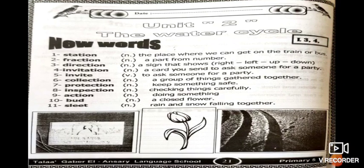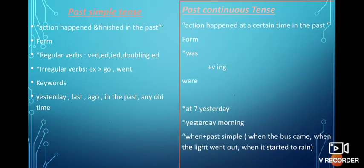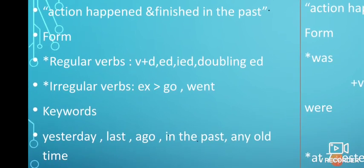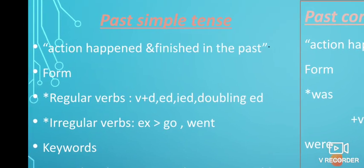Now let's turn to our grammar today. We are going to revise two tenses together: past simple and past continuous. The past simple tense expresses an action that happened and finished in the past. The form uses regular verbs (adding -ed) and irregular verbs — for example, 'go' becomes 'went'.